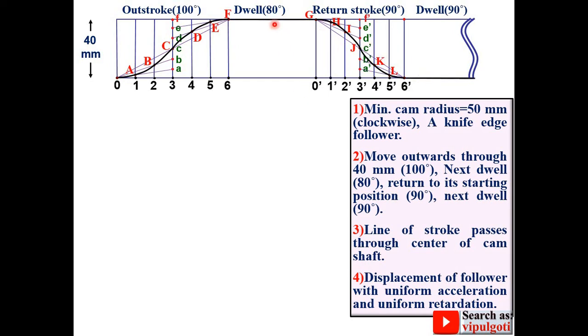And this is the dwell period so it must be horizontal line. So this is your displacement diagram.